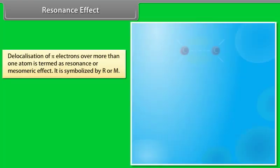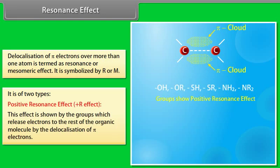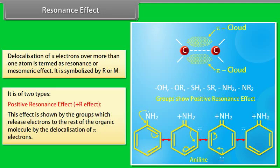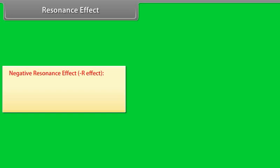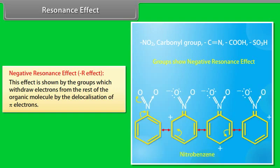Resonance effect: the delocalization of pi electrons over more than one atom is termed as the resonance or mesomeric effect. It is symbolized by R or M and is of two types. The positive resonance effect (positive R effect) is shown by groups which release electrons to the rest of the organic molecule by delocalization of pi electrons. The negative resonance effect is shown by groups that withdraw electrons by delocalization of pi electrons — for example, nitrobenzene.